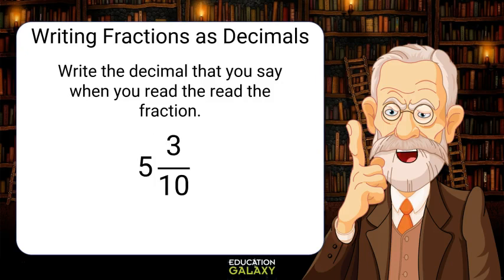Let's look at writing fractions as decimals now. We can do the same thing. Write the decimal that you say when you read the fraction. For example, 5 and 3 tenths is how I would read this fraction. And to write the decimal, I have the whole number of 5 and 3 in the tenths place. Hence, 5 and 3 tenths.